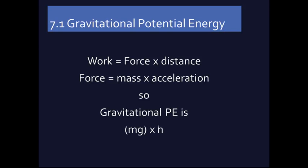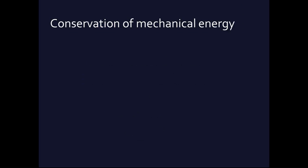Gravitational potential energy is going to be mass times acceleration times height, or mg times h, or mgy is another way of doing it. Young and Friedman use y. Where m is the mass, g is the constant 9.8 meters per second squared, and h or y is the height, the distance it's going to travel. So that's pretty simple.